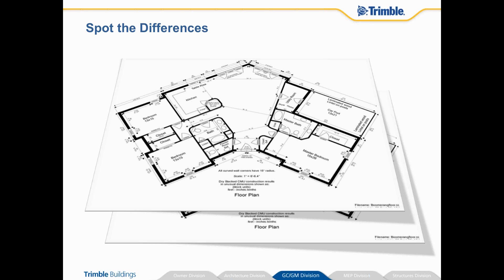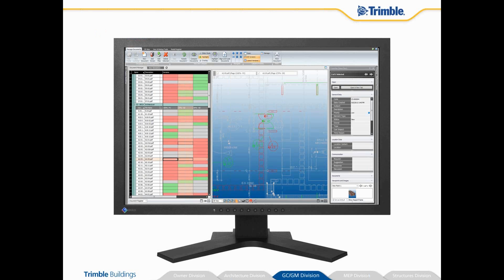Well, here's the good news — that's exactly what we built. Today we will demonstrate how Document Controller will help your project team spot differences and check drawing versions, overlaid if desired in 3D models, in an unprecedented way. Document Controller is a place where you can store your contract documents with your project. You see the document register on the left-hand side with the set of drawings, and Duane will talk about how you use that in a moment.